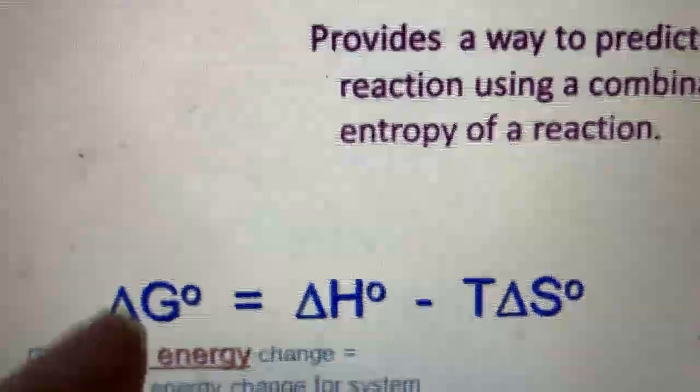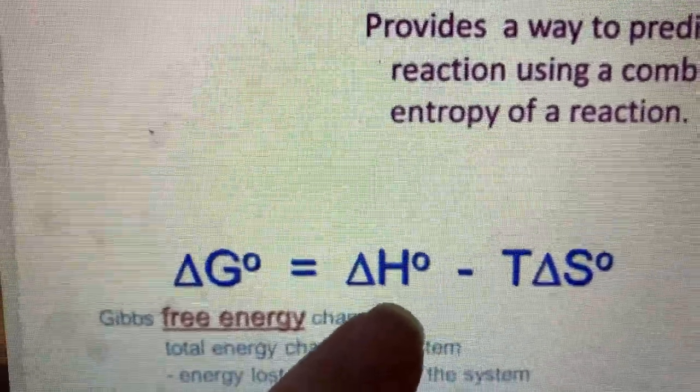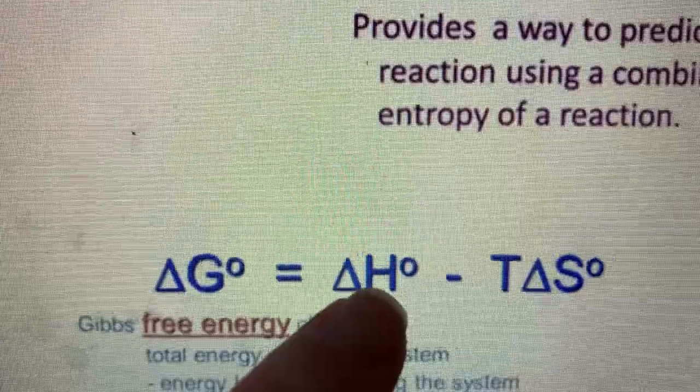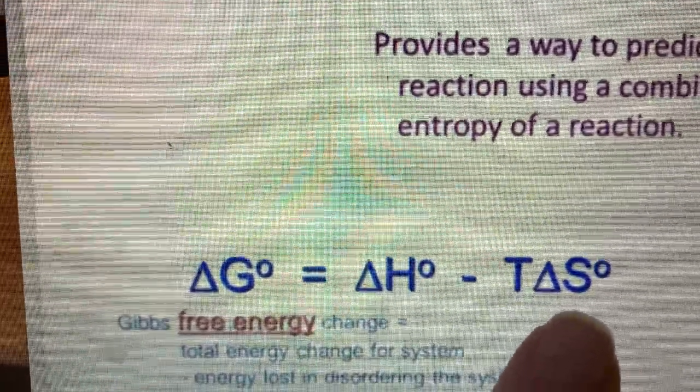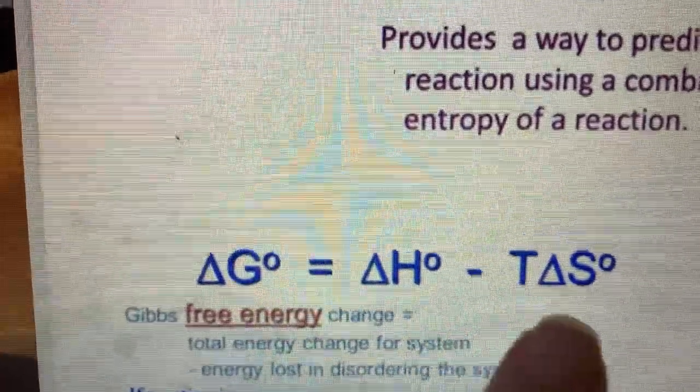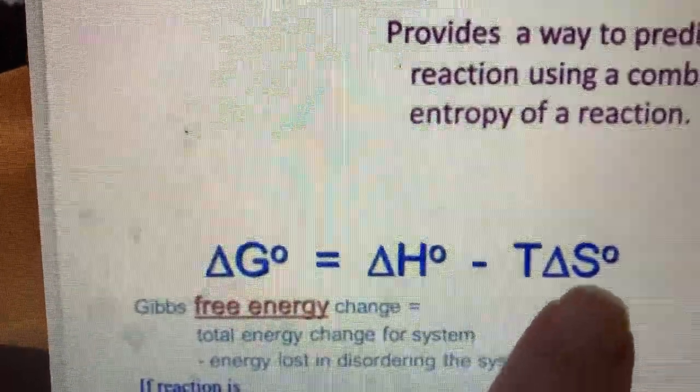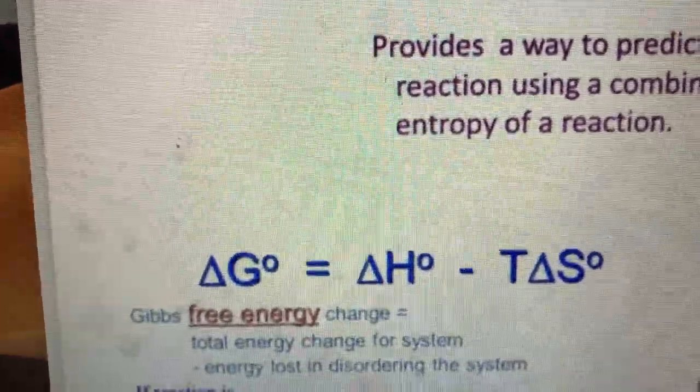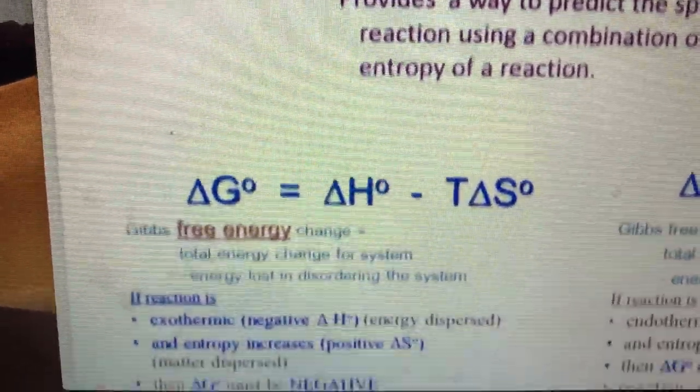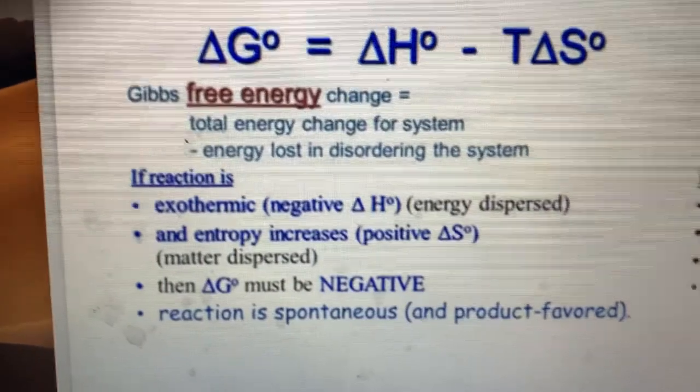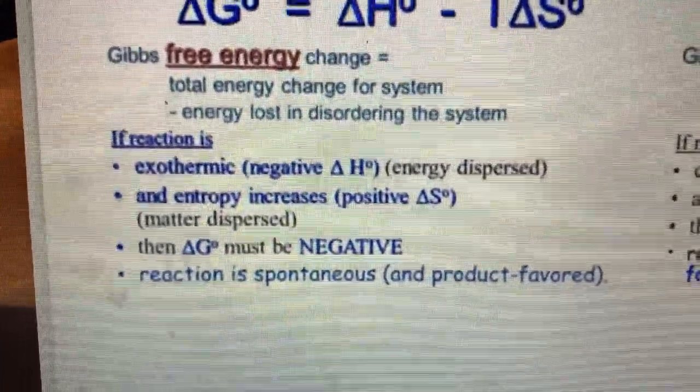The equation that we're going to be using today is delta G equals delta H, which is our enthalpy of reaction, minus temperature times delta S. Delta S, our entropy, is always temperature dependent, so that is why temperature is going to be involved in this reaction.